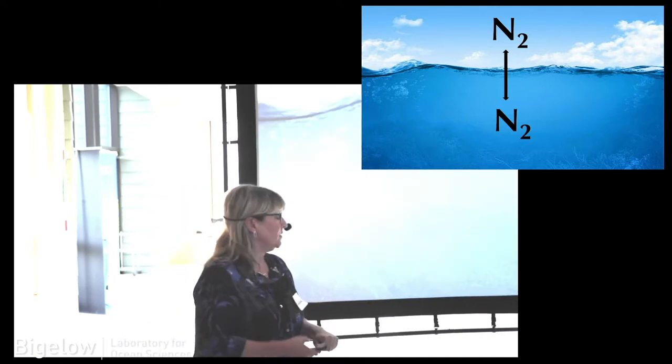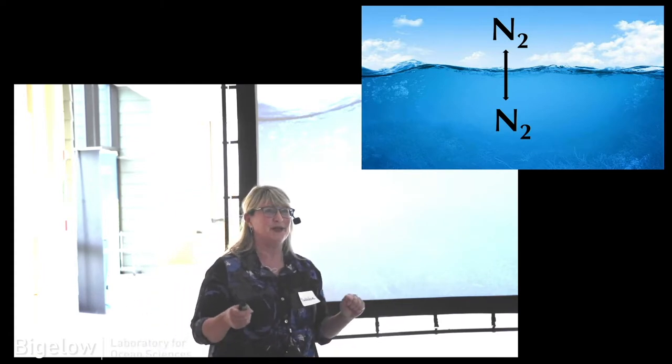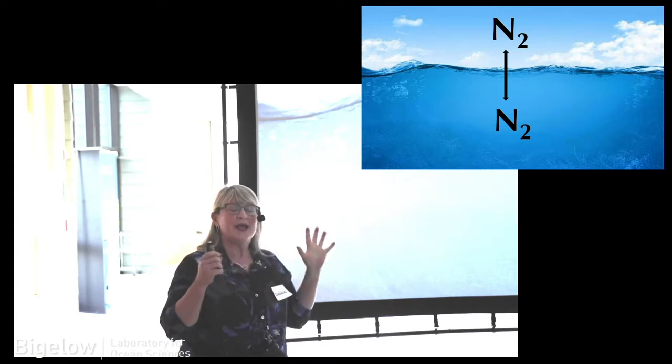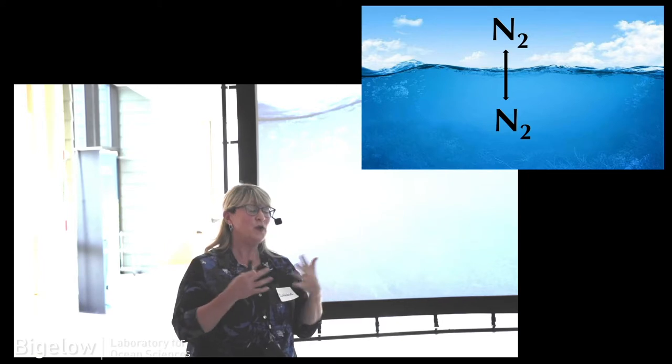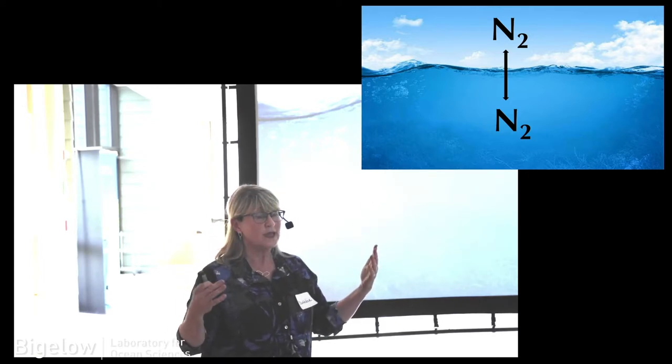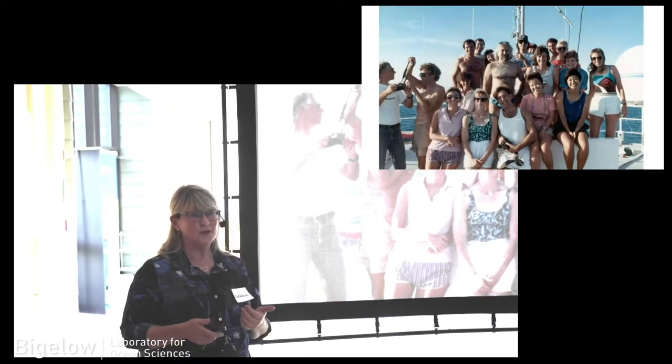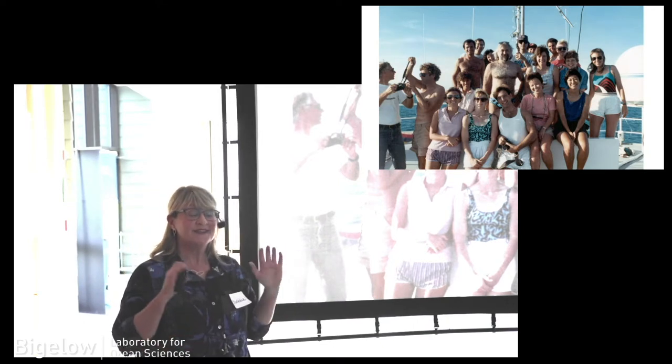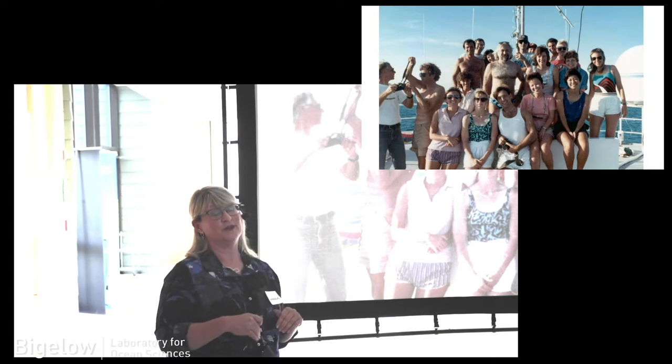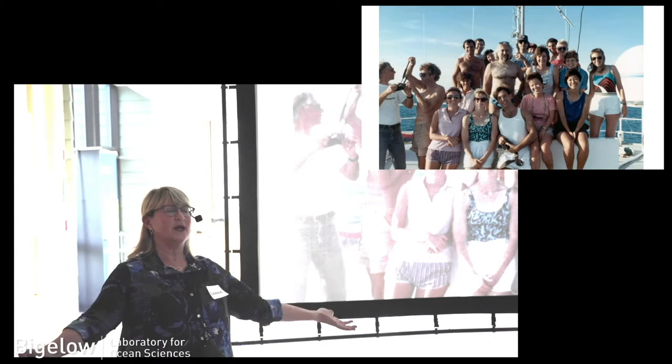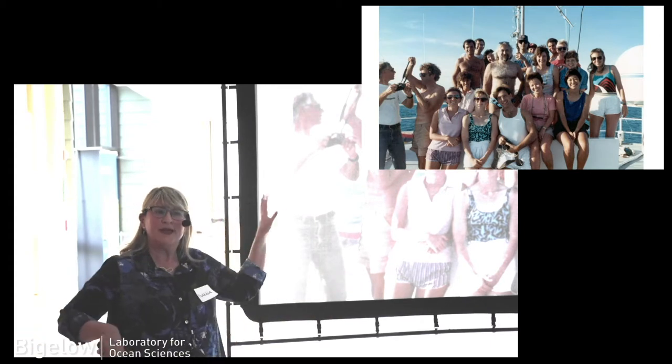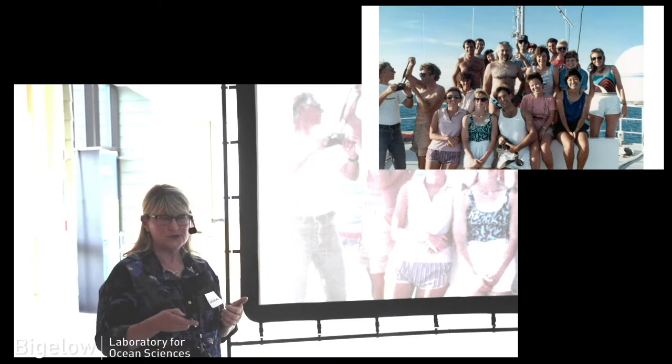Once they break that triple bond and take it up into their own bodies, it's in the system. It can, because they can be eaten, they can die and decay, and that nitrogen can be used by other organisms. It's the one way to get new nitrogen into the ocean, or actually onto the planet, is breaking apart that nitrogen gas. Nitrogen fixation is a fantastic process to work on because we only thought it occurred in the tropics or maybe the temperate zones. So you kind of can go island hopping. This is my very first cruise I ever took out of the University of Miami as a graduate student. This is Doug Capone who is one of my favorite people in the world.